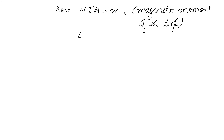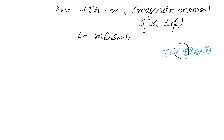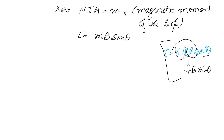Putting the magnetic moment value into the torque equation: tau = m × B × sin theta. Our earlier answer was tau = n I B A sin theta, and substituting n I A = magnetic moment m, we write B sin theta to get: tau = m B sin theta.